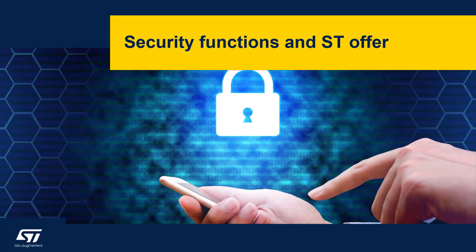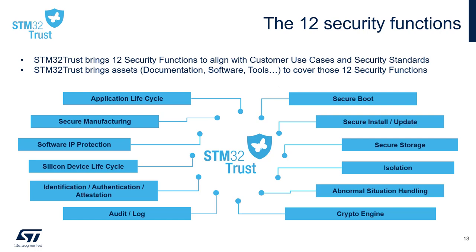So when we look at all those customers' examples and use cases, what we can see is that there is a common set of security functions which are required to secure all those customers' products. So we have defined a list of these security functions which we have also mapped across our product portfolio. Hence, the STM32 Trust brings 12 security functions to align with both customer use cases and security standards. The STM32 Trust brings also all the assets, documentation, software, and tools to cover the 12 security functions which are listed here below.